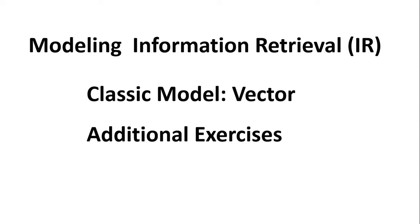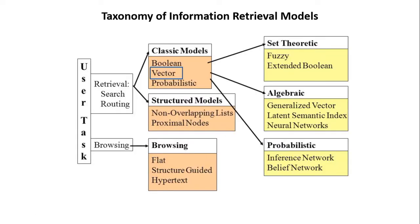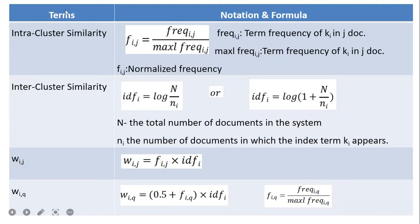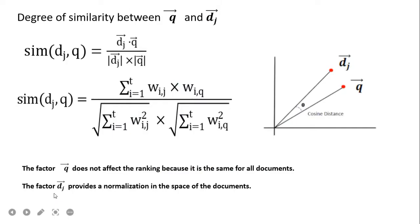Welcome to this channel. The topic of this video is modeling information retrieval — the classical vector model. I have already published a video on the classical vector model with theory and exercises. In this video I am going to cover additional exercises on vector modeling. When we solve a problem on vector modeling we first calculate intra-cluster similarity, then inter-cluster similarity, and after that we multiply them to get wij and wiq, and then find similarity using the cosine formula.